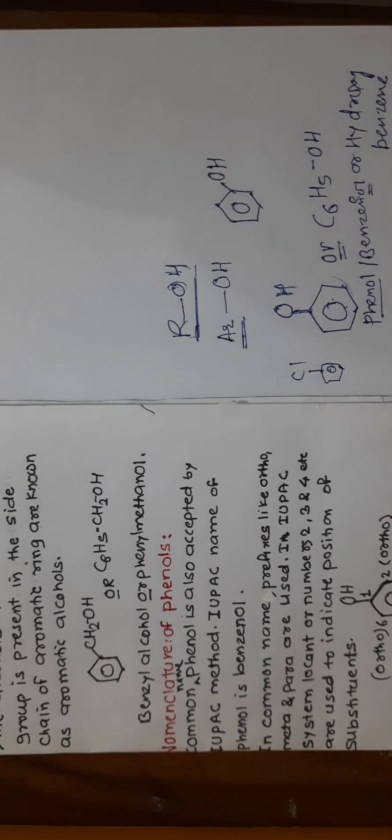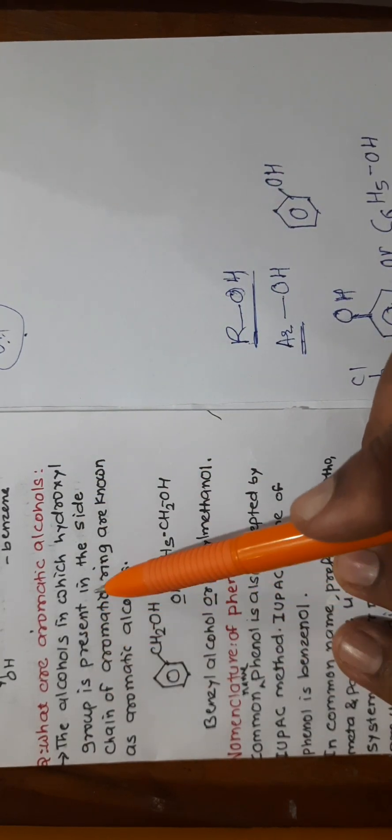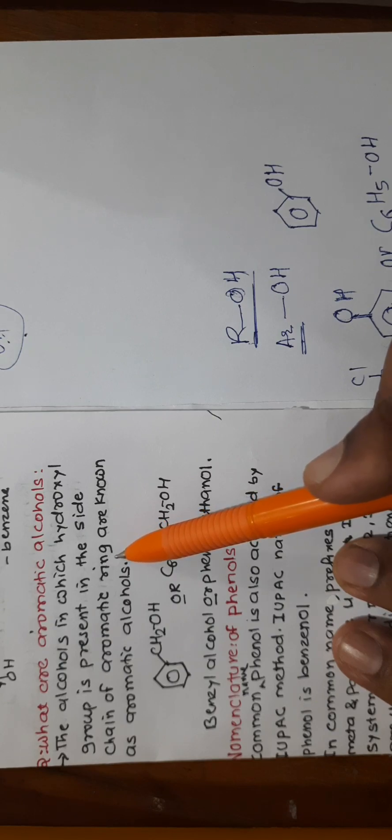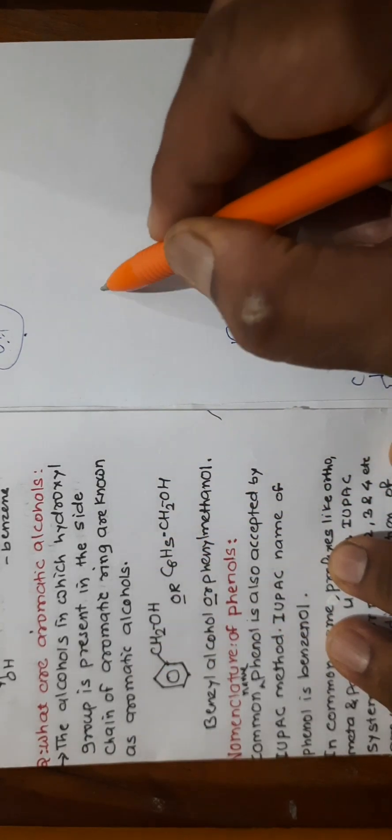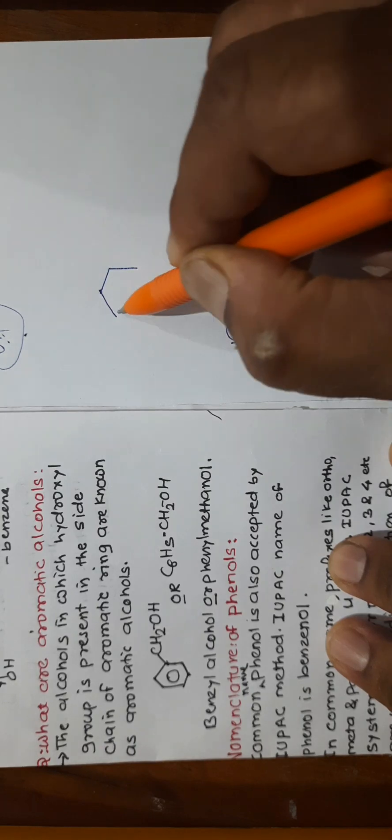A question that was asked in previous board examinations: what are aromatic alcohols? Aromatic alcohols are the alcohols in which the hydroxyl group is present in the side chain of the aromatic ring. Compounds where OH is in the side chain of the aromatic ring are known as aromatic alcohols.